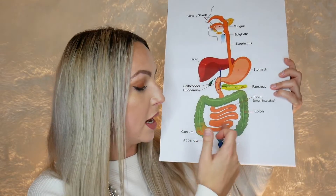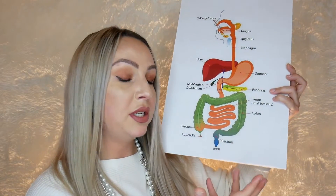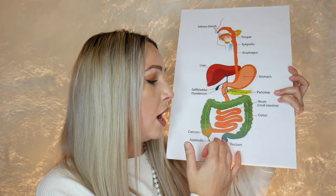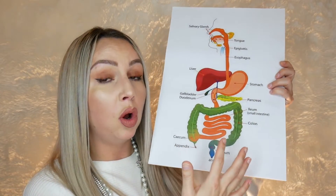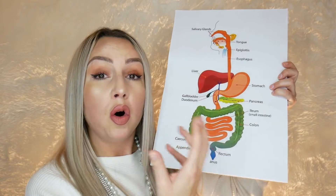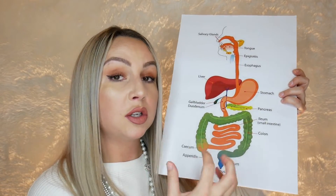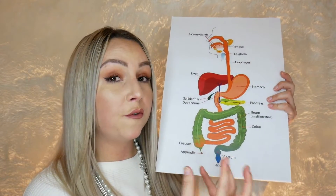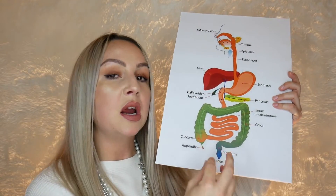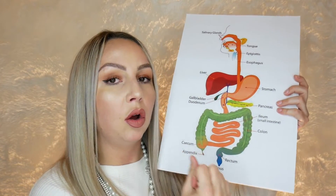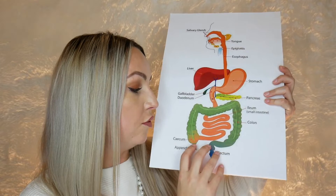Next is left-sided colitis, which includes the descending section of the colon as well, with all the same symptoms plus significant weight loss and pain on the left side of the abdomen. Then there's pancolitis, which affects the whole colon, rectum, and anus — all the previous symptoms plus chronic fatigue and significant weight loss because such a large area is affected. The most severe form is severe acute ulcerative colitis, which again affects the whole colon but with very acute, intense pain, dramatic weight loss, and severe diarrhea.